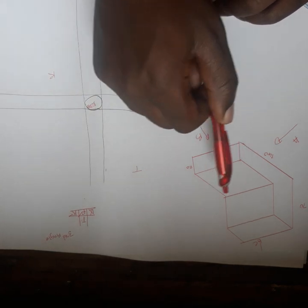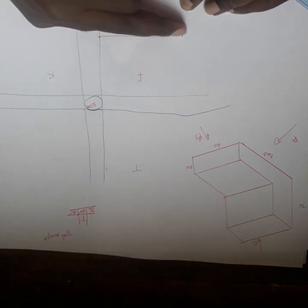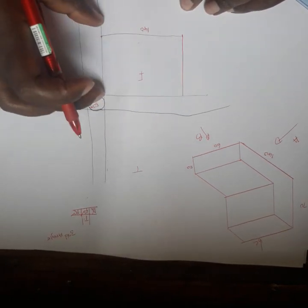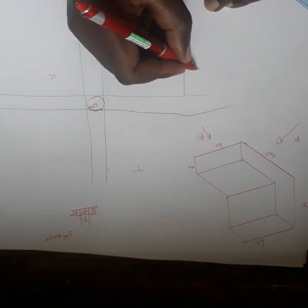Basically, vertical lines remain vertical in this view. Horizontal lines become frontal lines. If I take it up here, this one's already 70 because I measured 70. So from here to here is 140, from here to here is 70.